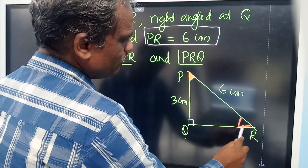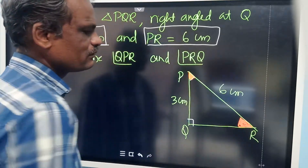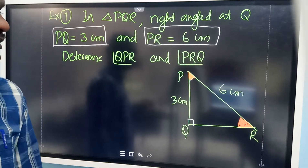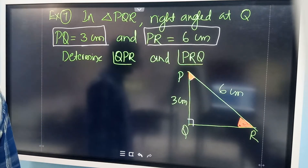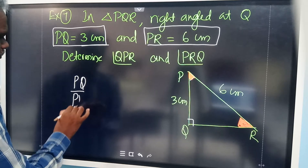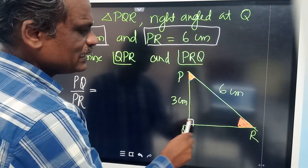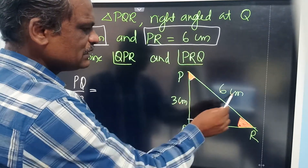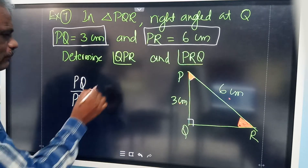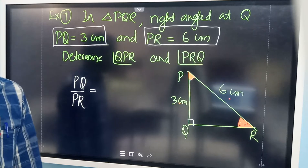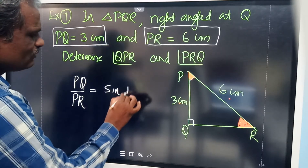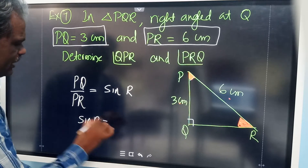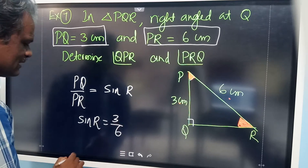Both acute angles need to be identified. Only two sides are given, so we find the ratio PQ by PR. With reference to angle R, PQ is the opposite side and PR is the hypotenuse. So opposite side by hypotenuse equals sine R. Substituting values, sine R = PQ by PR = 3 by 6 = 1 by 2.